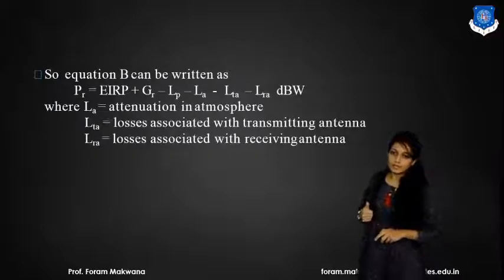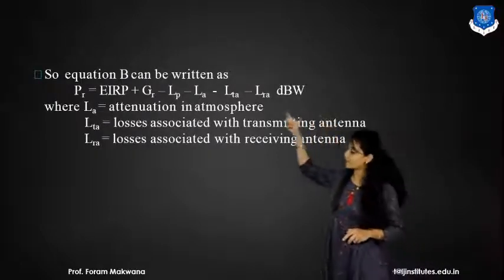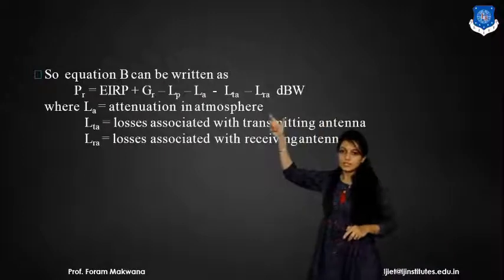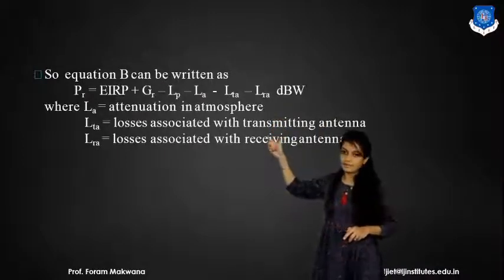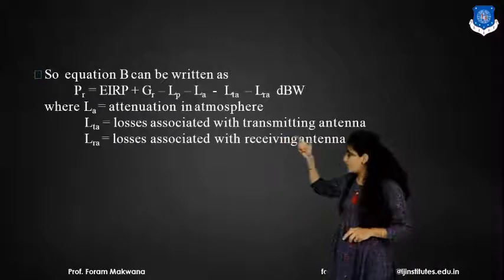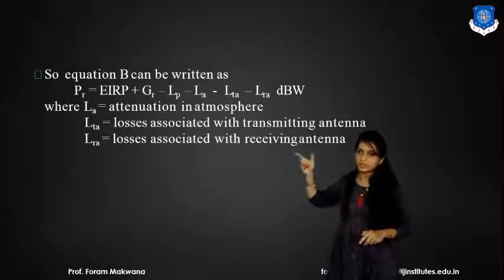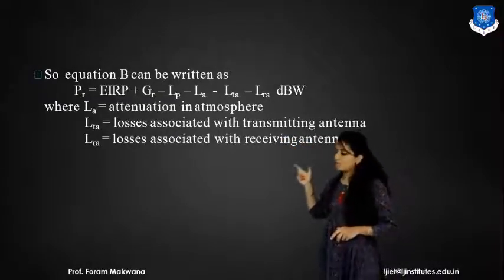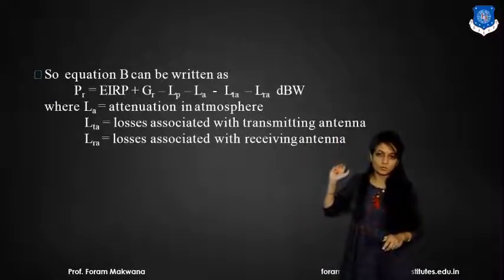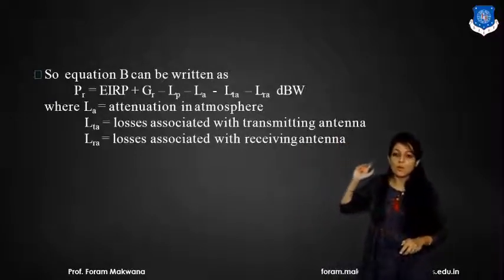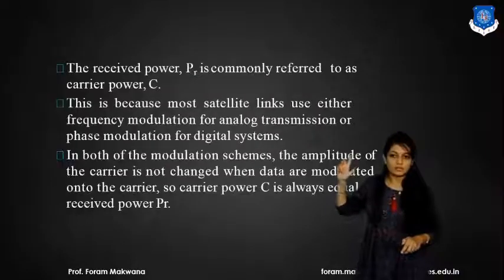So for that, we are going to consider three types of losses: first, A — the attenuation in the atmosphere; second, the loss associated with the transmitting antenna itself; third, the loss associated with the receiving antenna. These three are the losses we need to account for when considering the practical situation.